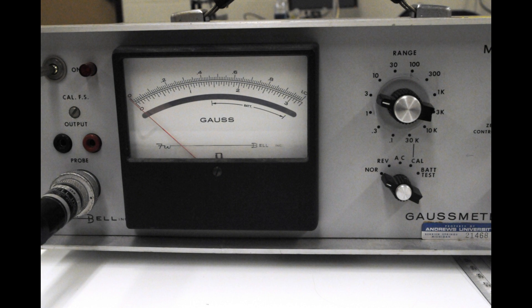When the range dial on the right is set for a maximum value of 0.3, 3, or 30 gauss, then the bottom scale is used. But when the range dial is set for 0.1, 1, or 10 gauss maximum, then the upper scale is used.